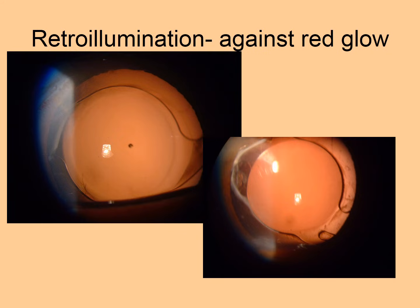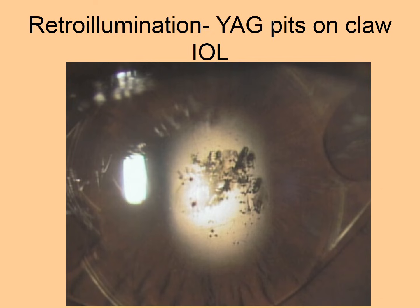The next type of illumination is retro illumination. In retro illumination, the object of interest — in this case the intraocular lens — is seen in shadow against a background illumination. Here the background illumination is from the choroid, and this is called retro illumination against the red reflex. Retro illumination need not always be against the red reflex; it can also come from the iris, where the iris is lit up and pits in the lens can be seen as shadows.